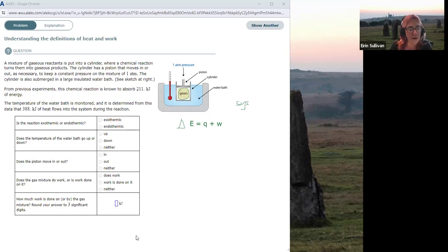So first of all, we've got to decide what is being given to us in the question. So this reaction is absorbing 211 kilojoules of energy. So that means our delta E, which I'm just going to write delta E, is positive, defined relative to the system, because the system is absorbing energy and the amount is 211 kilojoules.